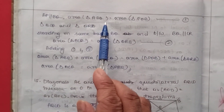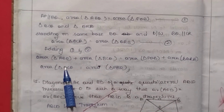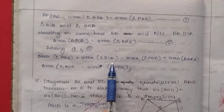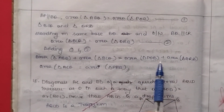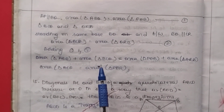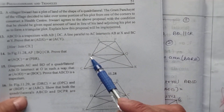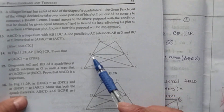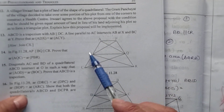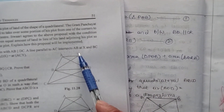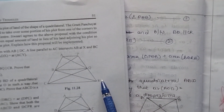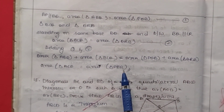By adding equation 1 and equation 2: left-hand side, triangle ABQ plus triangle BCQ gives triangle AQC. Right-hand side, triangle PQB plus triangle QRB gives triangle PBR. Therefore area of AQC is equal to area of PBR. Hence proved.